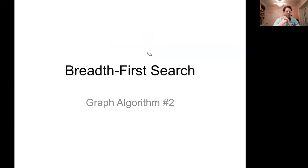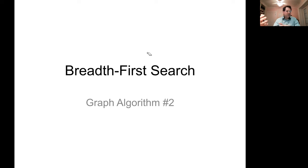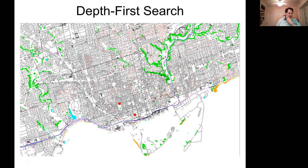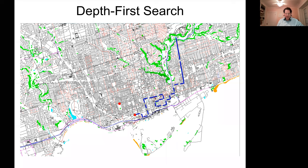We're going to switch from depth-first search to a better algorithm called breadth-first search. Several people in the chat are talking about Dijkstra's algorithm — Dijkstra's algorithm is a small enhancement to breadth-first search. Depth-first search and breadth-first search are two classic graph search algorithms, and Dijkstra's algorithm, which is better still, is a small enhancement to the breadth-first search code.